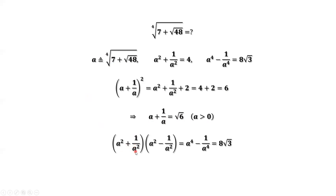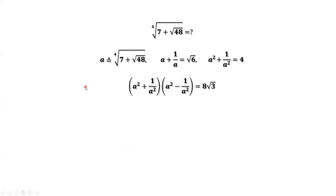Next, we compute (A squared plus 1 over A squared)(A squared minus 1 over A squared), using the formula A plus B times A minus B equals A squared minus B squared. The left-hand side equals A to the power of 4 minus 1 over A to the power of 4, which we found equals 8 times square root of 3. The first factor is 4, so dividing both sides by 4 gives A squared minus 1 over A squared equals 2 times square root of 3.